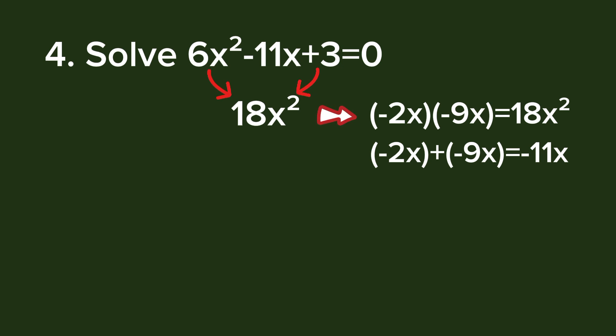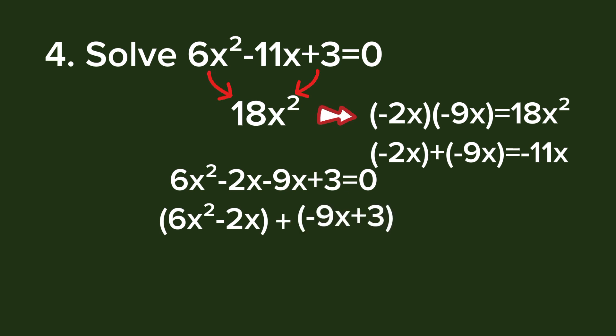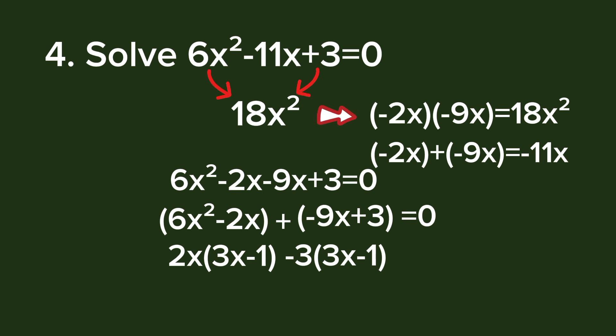Our new equation is 6x² - 2x - 9x + 3 = 0. We group (6x² - 2x) and (-9x + 3), then equate to zero. Factoring 6x² - 2x gives 2x(3x - 1). Factoring -9x + 3 gives -3(3x - 1). This is our new equation.